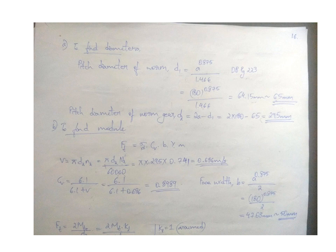Face width b equals A times 0.875 divided by 2. This equation is also in the data book. Our next step was Ft equals 2 times Mt times e by d2.